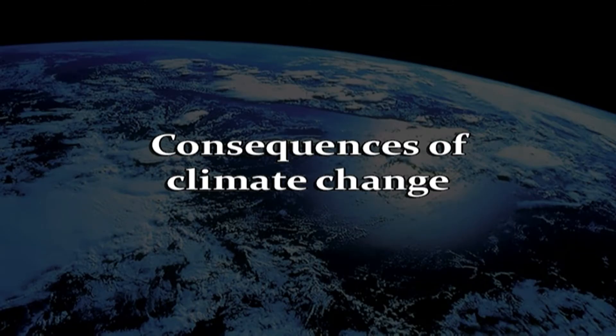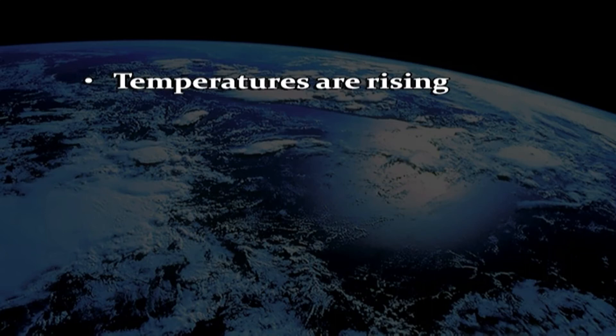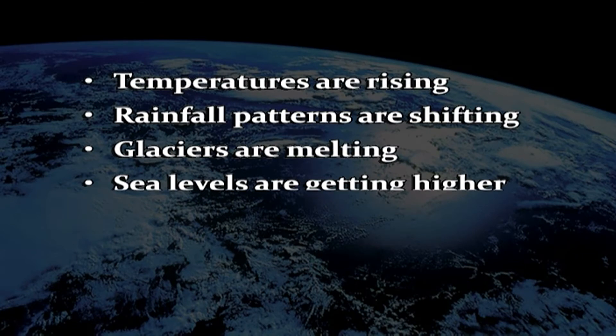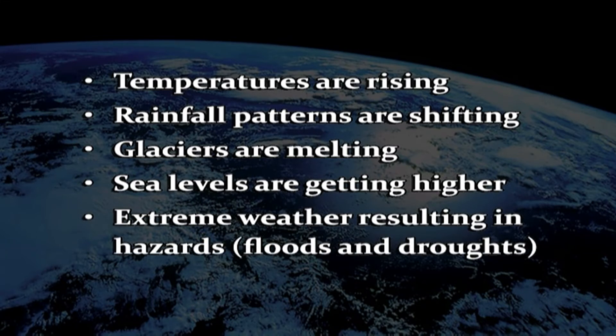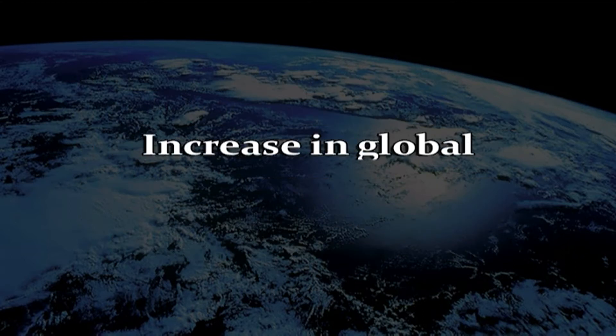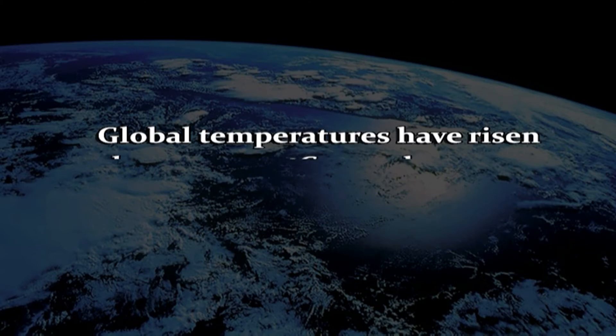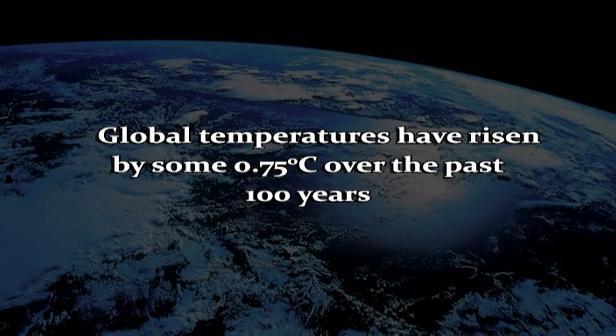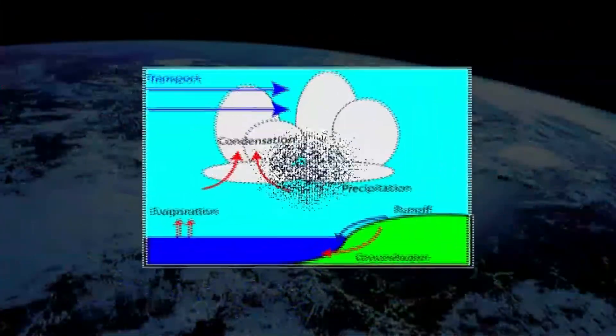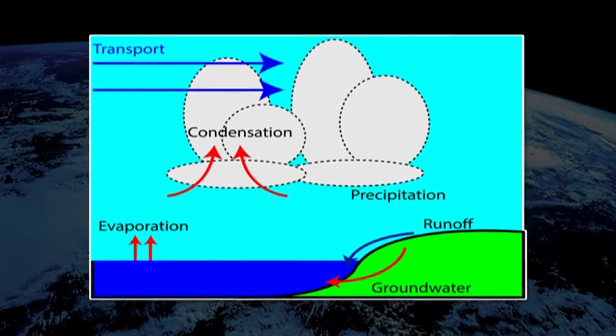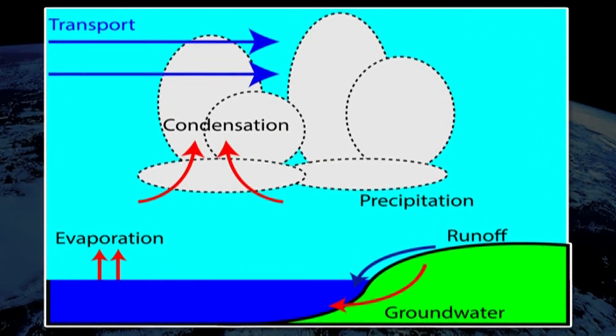Now coming to the consequences of climate change. The first consequence can be seen in Europe and worldwide, and these impacts are predicted to intensify in the coming decades. Temperatures are rising, rainfall patterns are shifting, glaciers are melting, sea levels are getting higher, and extreme weather resulting in hazards such as floods and droughts is becoming more common. Global temperatures have risen by some 0.75 degrees centigrade over the past 100 years. An increase of 2 degrees centigrade above the temperature in pre-industrial times is seen by scientists as the threshold beyond which much catastrophic change in the global environment will occur. Warmer conditions will probably lead to more evaporation and precipitation overall, but individual regions will vary, some becoming wetter and others drier.